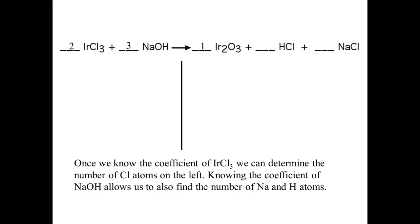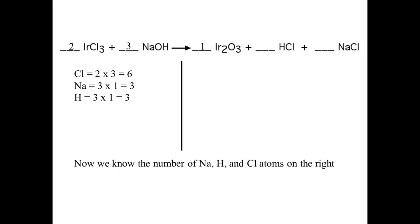Since we know the coefficient of IRCl3, we can find the number of chlorine atoms in the reactants, because chlorine appears only once in the reactants. This is a product of the coefficient and the subscript: the coefficient is 2, the subscript is 3, so two times three equals six chlorine atoms. We also know the coefficient of NaOH, so we can find the number of sodium atoms — three — and the number of hydrogen atoms — also three. Now we know the number of sodium atoms in the products is three, hydrogen atoms is also three, and chlorine atoms in the products is six.